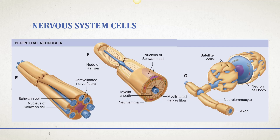The next cell is a Schwann cell, and a Schwann cell makes up the myelin sheath in the peripheral nervous system. This Schwann cell wraps around the nerve, and that's going to electrically insulate and protect the axon of the neuron. Satellite cells support the cell bodies of neurons in the peripheral nervous system. Both of these cells are found in the peripheral nervous system, while the other four we talked about are found in the central nervous system.